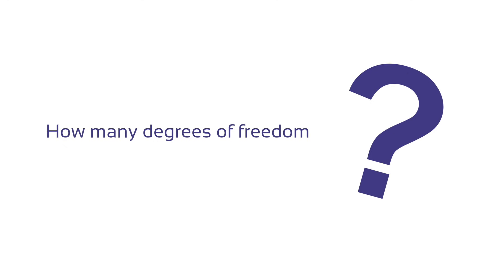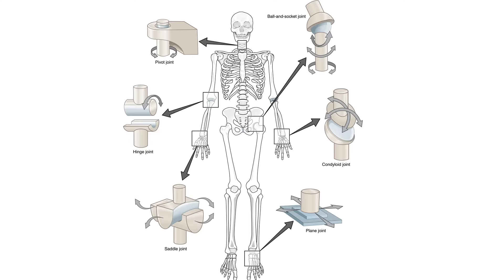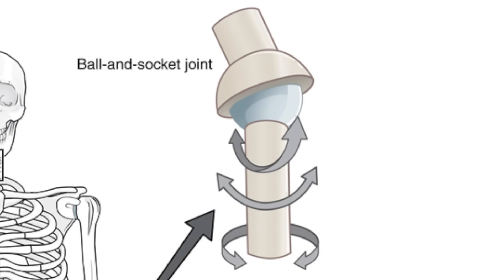Before you describe a movement in a joint, you should ask yourself how many degrees of freedom this joint has. As the shoulder joint is a ball and socket joint, morphologically and functionally, its level of freedom is 3.